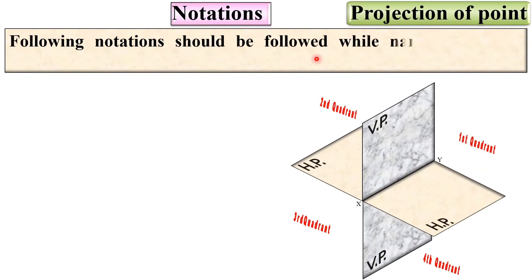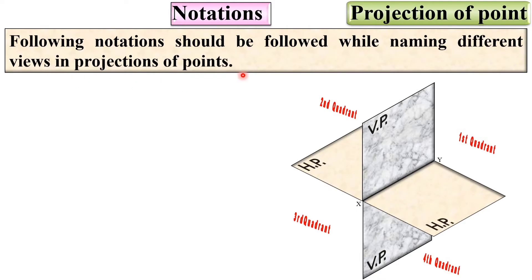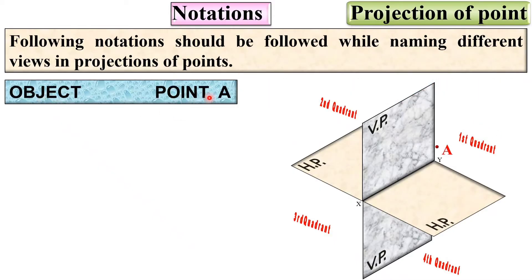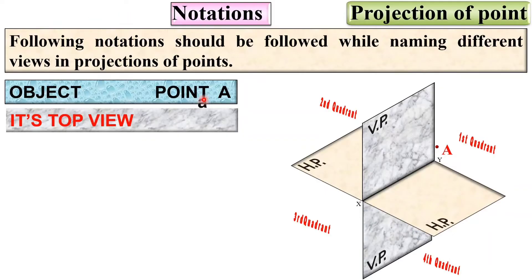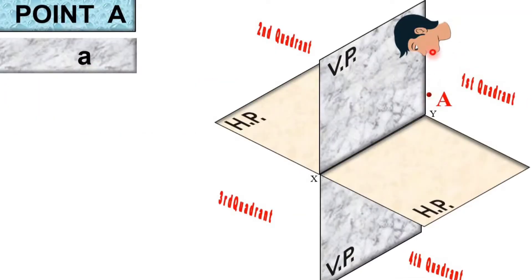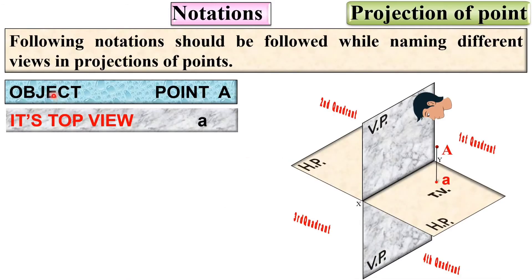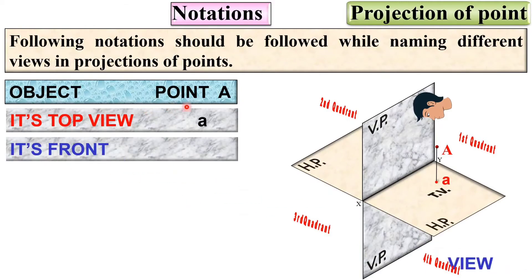The following notations should be followed while naming different views in the projections of points. The object is considered as point A. If point A is there and I want to see its top view, then it is denoted by small 'a'. So if you see from the top side, the projection is considered the top view and that is denoted by small 'a'. If point A is there but I want to draw the front view, then it is denoted by a-dash.